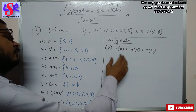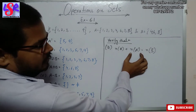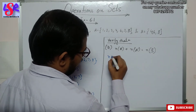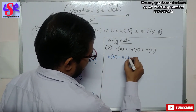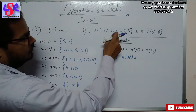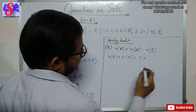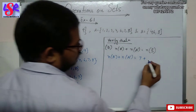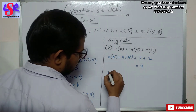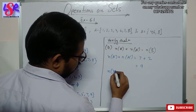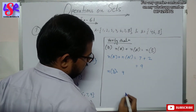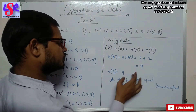Now for part B we have to verify that N(A) plus N(A complement) equals N(universal set). N(A) = 7 and N(A complement) = 2, giving 7 + 2 = 9. N(universal set) also has 9 elements (1 to 9). Both are equal to 9, hence verified.